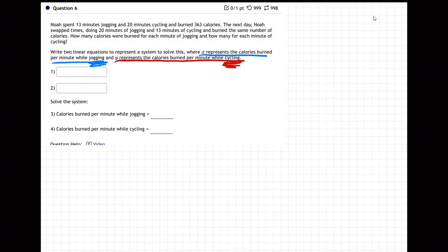So 13 minutes jogging, that's X, right? X is jogging. So that's 13X plus 20 minutes cycling. That's 20Y and burned 363 calories. So 13X plus 20Y equals 363 calories.